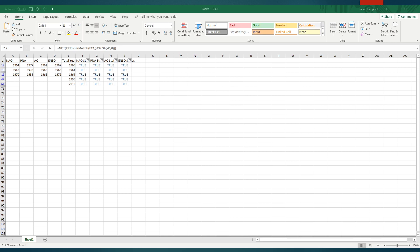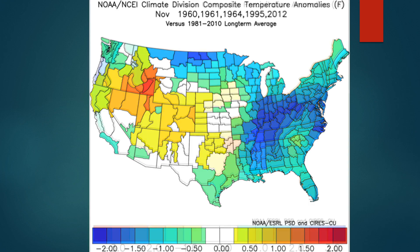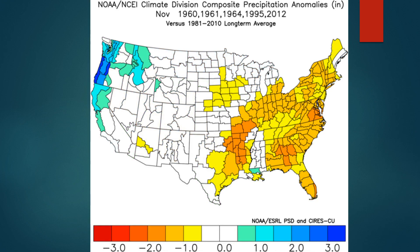These were the temperature anomalies for the month of November in those select years. The Midwest and east of it were well below average, about 2 degrees Fahrenheit below average over the course of the whole month. The Rocky Mountains and west remained about 1 to 2 degrees Fahrenheit above average. When looking at precipitation, much of the east coast saw below-average precip, while the Pacific Northwest saw above-average precip.